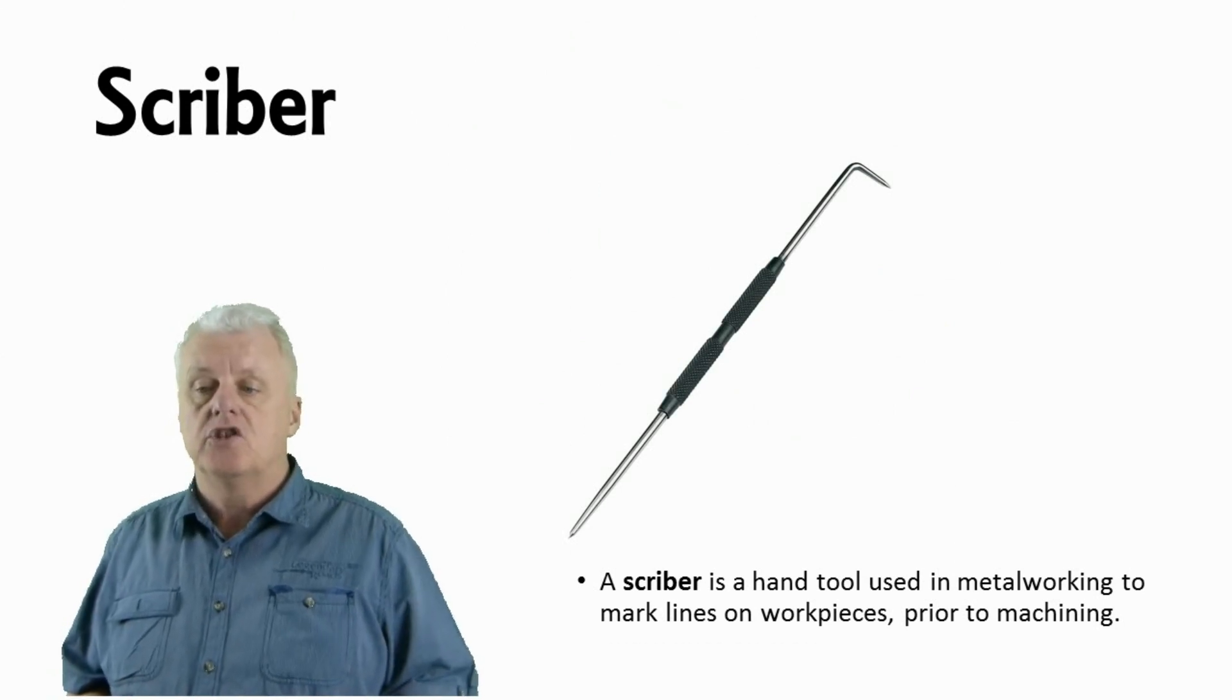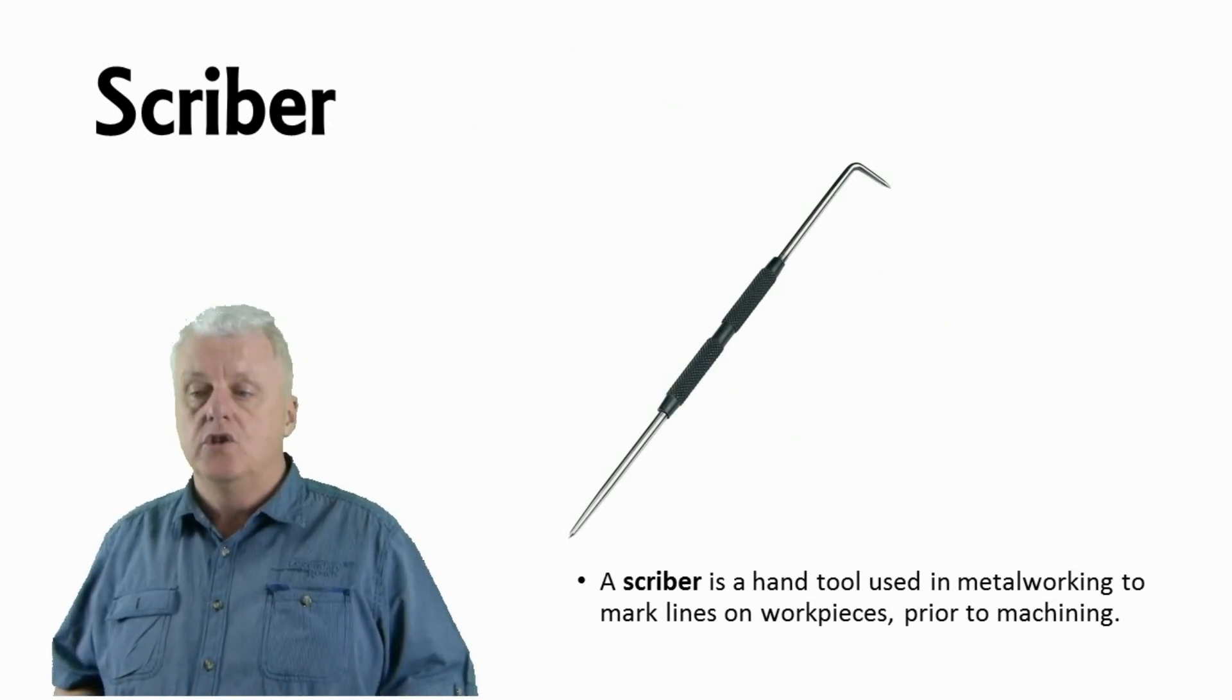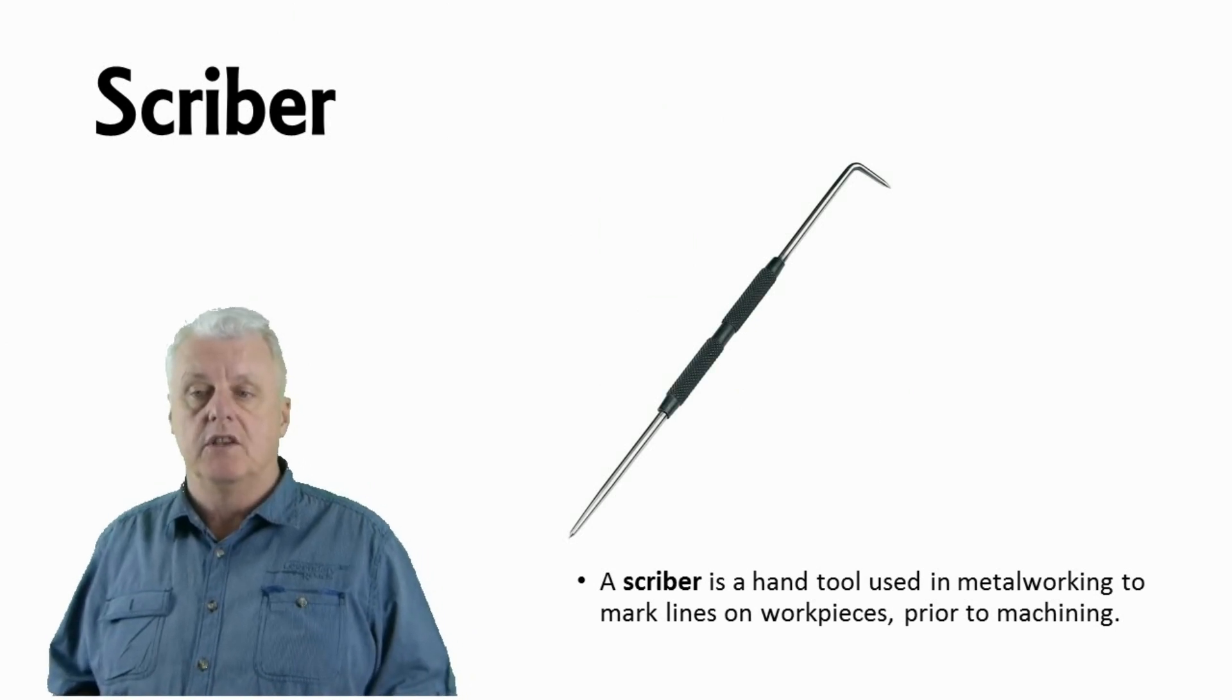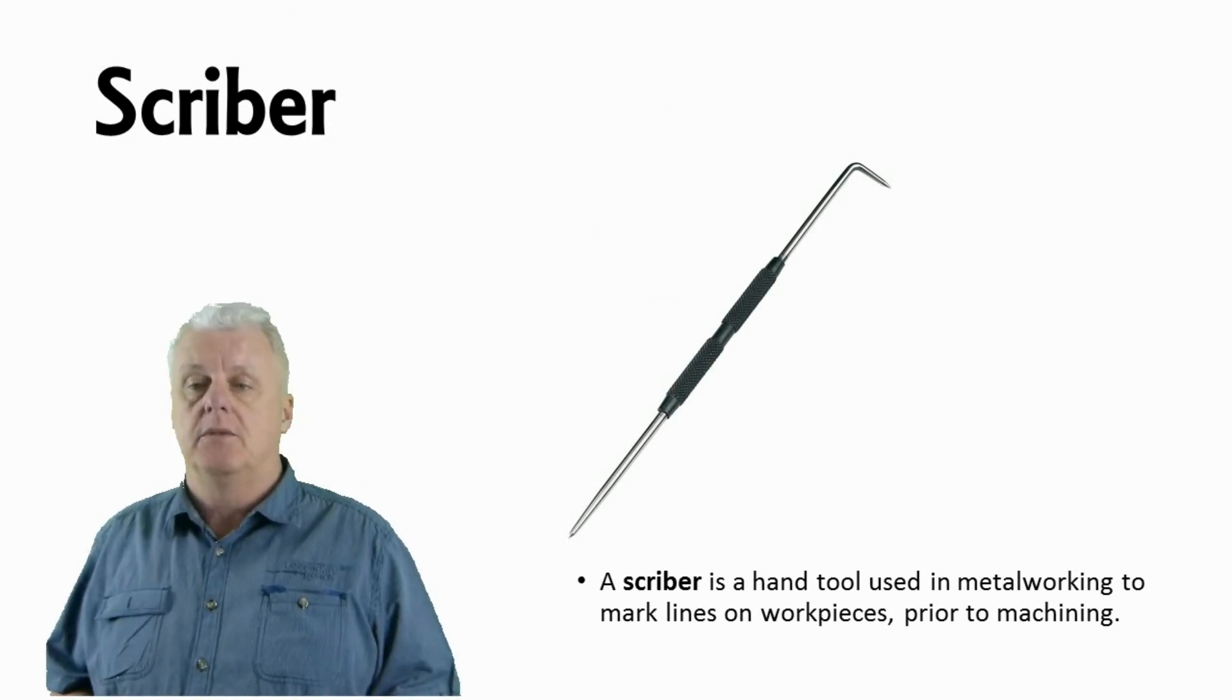A scriber. A scriber is a hand tool used in metalwork to mark lines on workpieces before you machine the piece.